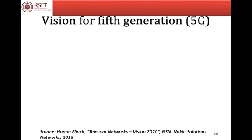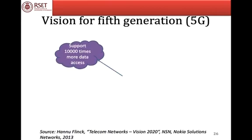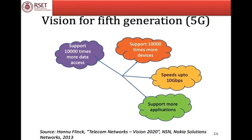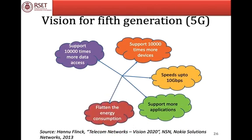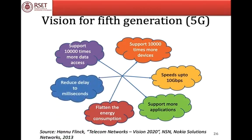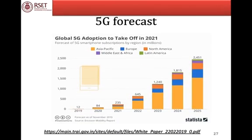The major goals for 5G technology include supporting 10,000 times more data access, 10,000 times more devices, speeds up to 10 Gbps, and more applications. It also aims to reduce energy consumption and reduce delay to the order of milliseconds. According to an Ericsson forecast from November 2019, around 84 million 5G smartphone subscribers were predicted for 2020, expected to reach over 2,000 million subscribers by 2025.